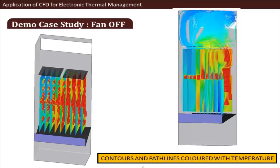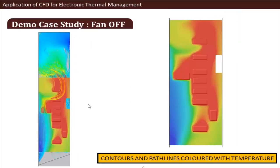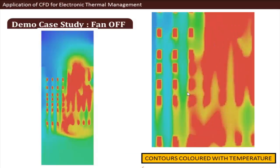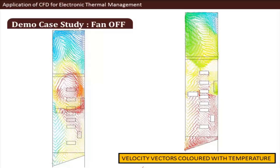With the fans off, all heat-dissipating components heat up to very high temperatures that may damage them. There is very low air circulation, as seen in the vector plots. For a single PCB, all components have heated up and the entire board reaches a very high temperature that may damage both the board and the components.